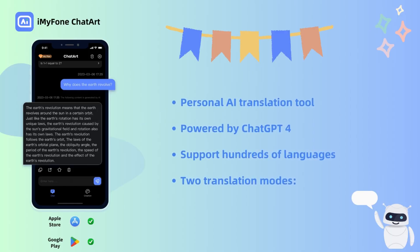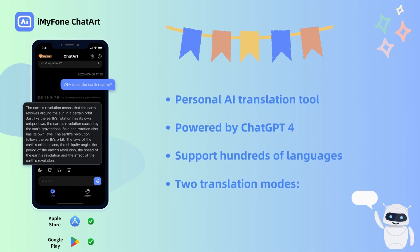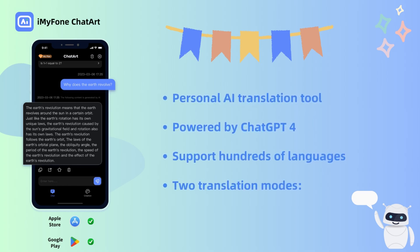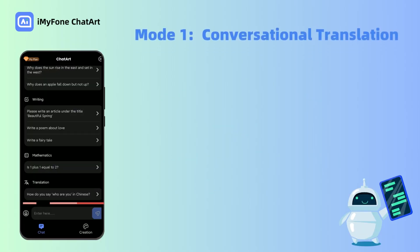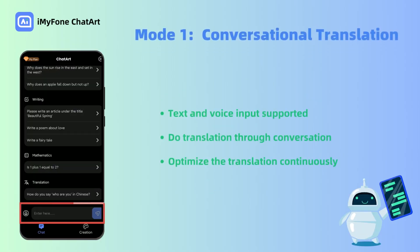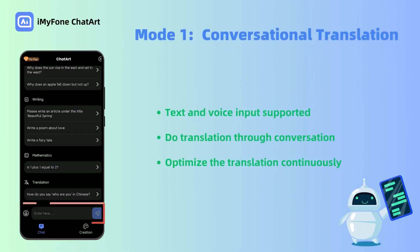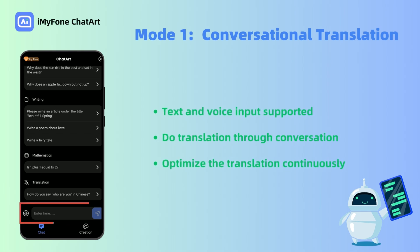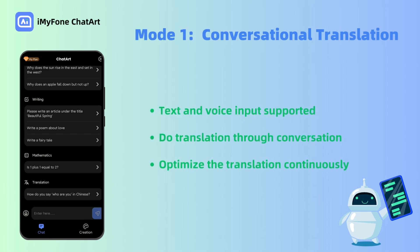ChatArt, powered by ChatGPT-4, is a personal AI translation tool that supports hundreds of languages. It also has two translation modes. The first mode is called conversational translation. With this mode, you can communicate with it through text or voice conversation to get continuously optimized translation results.